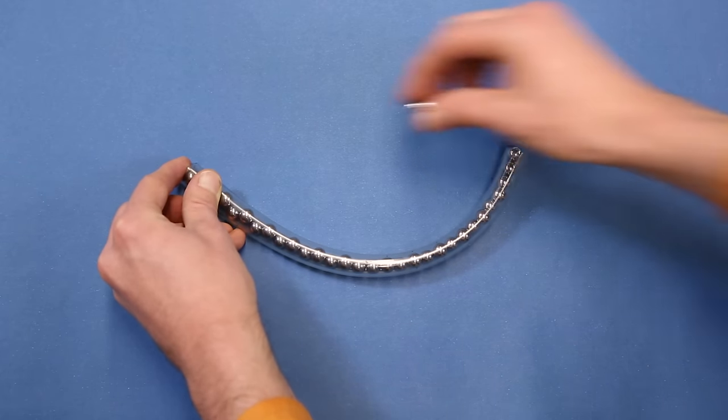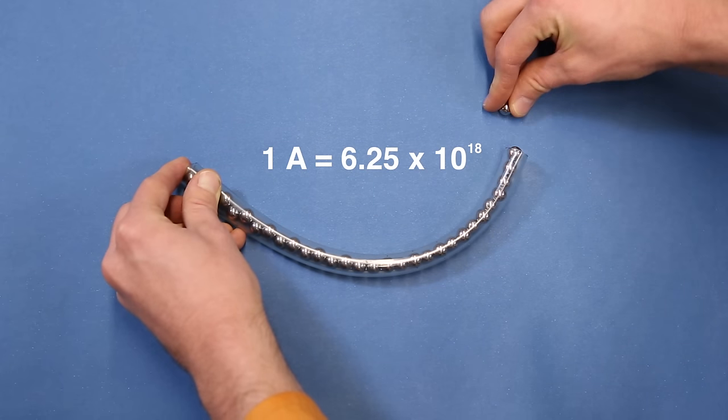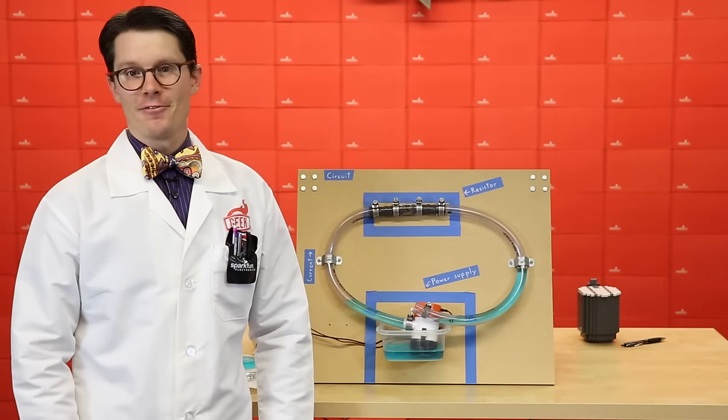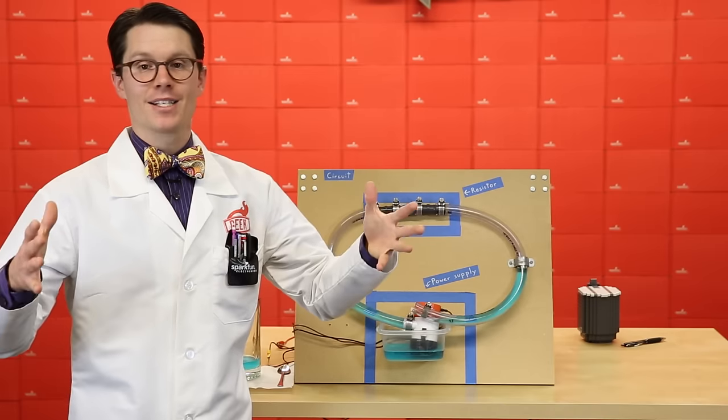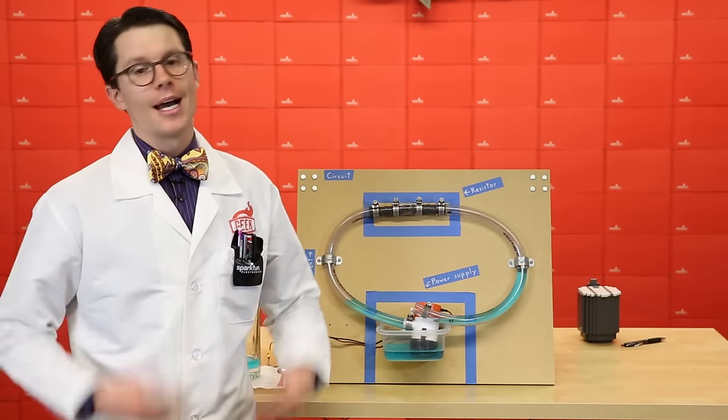If one steel ball represented one electron, then it would take around 6.25 times 10 to the 18th steel balls to move past a point per second to make one amp. Since I don't have billions of steel balls in a massive plastic tube, we need some other way to show electric current. As it turns out,